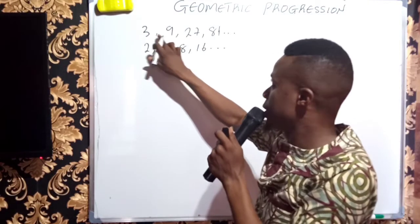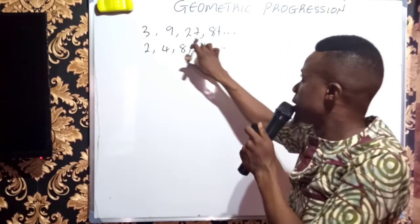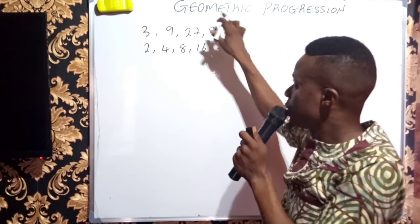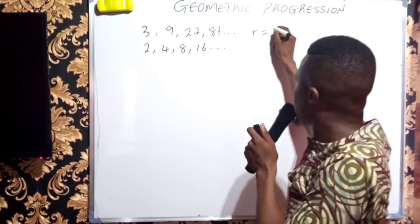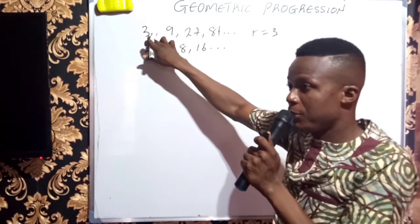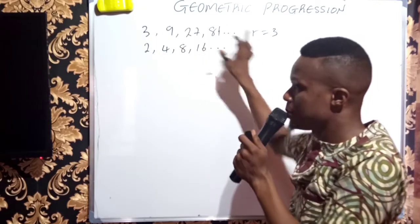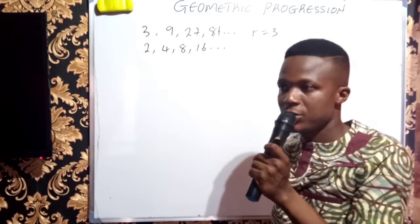For instance here, 3 times 3 is 9, 9 times 3 is 27, 27 times 3 is 81. So you see that here the common ratio is 3 because I am multiplying first term by 3 to get second term, second term by 3 to get third term, in that sense, respectively.